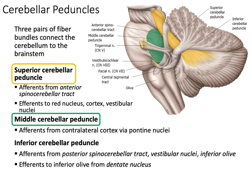Next we have the middle cerebellar peduncles, which contain afferents from the contralateral cortex via the pontine nuclei. Because it's contralateral, these are crossing fibers in the pons — the pyramidal upper motor neurons travel down the pons, have collaterals that synapse on pontine nuclei, and those nuclei cross into the cerebellum so your cerebellum knows what the intended output is. The inferior cerebellar peduncles have afferents from the posterior spinal cerebellar tracts heading into the anterior lobe, with outputs going to the inferior olive.